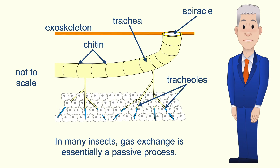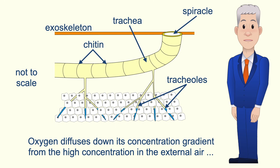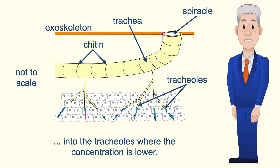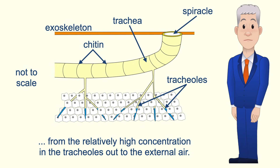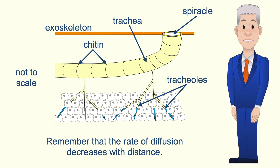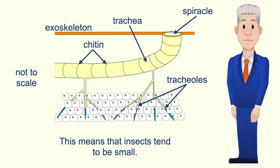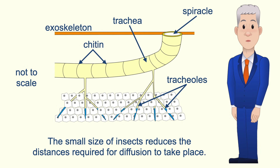In many insects gas exchange is essentially a passive process. Oxygen diffuses down its concentration gradient from the high concentration in the external air into the tracheoles where the concentration is lower. Carbon dioxide diffuses down its concentration gradient from the relatively high concentration in the tracheoles out to the external air. Remember that the rate of diffusion decreases with distance, so this means that insects tend to be small — their small size reduces the distances required for diffusion to take place.